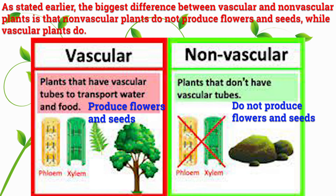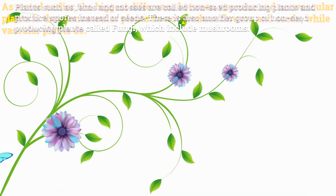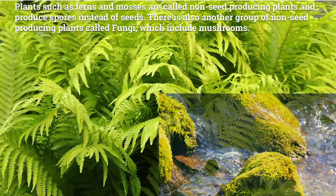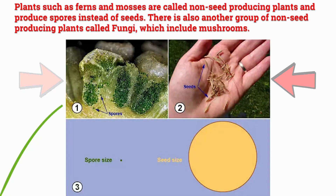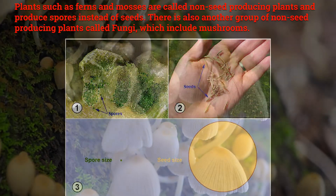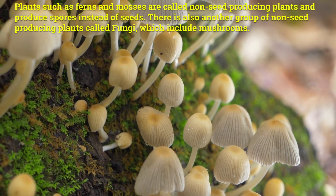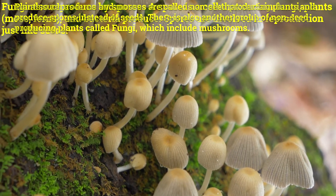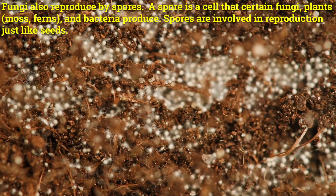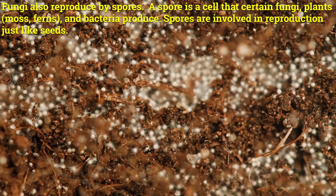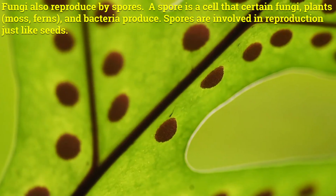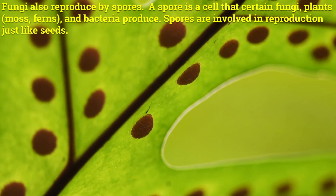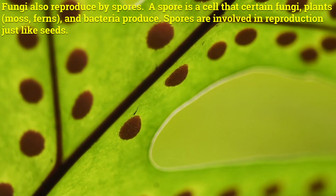Plants such as ferns and mosses are called non-seed-producing plants and produce spores instead of seeds. There is also another group of non-seed-producing plants called fungi, which include mushrooms. Fungi also reproduce by spores. A spore is a cell that certain fungi, plants like moss and ferns, and bacteria produce.